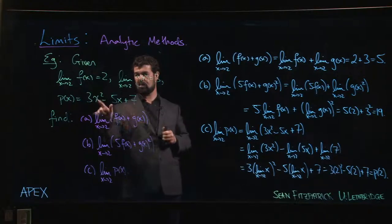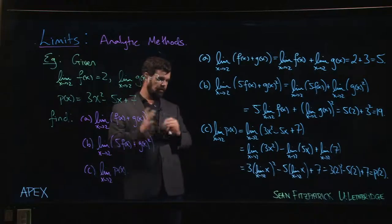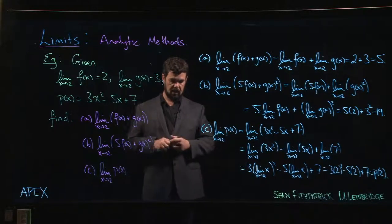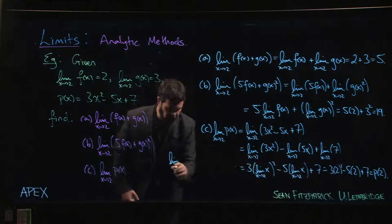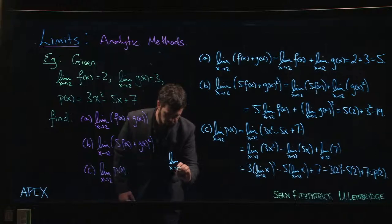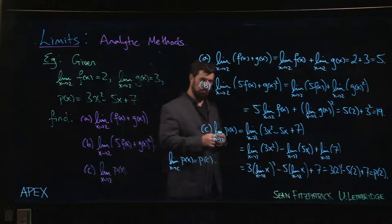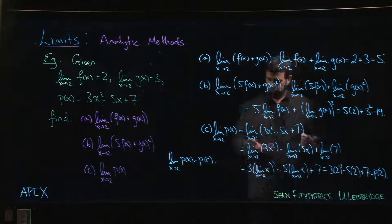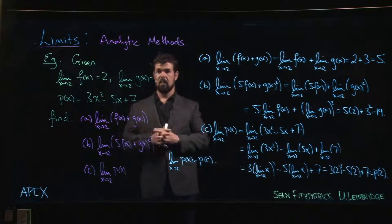Say that for any polynomial function—any function that's given just in terms of powers of x with real number coefficients out front—for any polynomial, the limit of a polynomial is just given by evaluating the polynomial at that point. So in general, it would be true—there's nothing special about 2 here—it would be true that the limit as x goes to c of p(x) would be p(c), because all that would change is in this last step you would replace that 2 by some other number and you would plug in the 2.